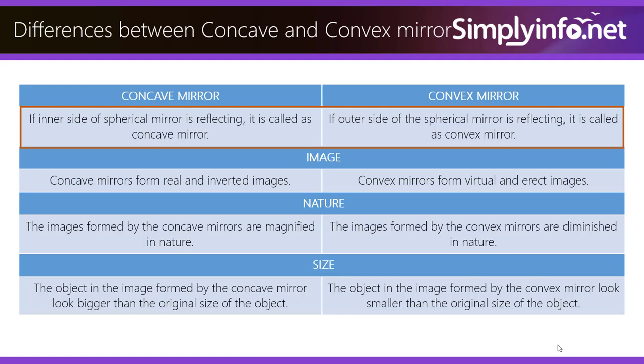The images formed by the concave mirrors are magnified in nature, whereas in convex, they are diminished in nature.